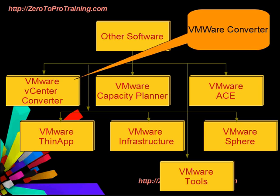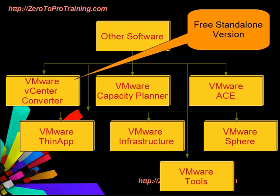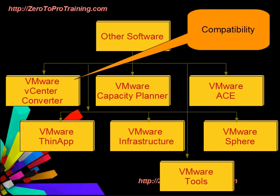VMware vCenter Converter is also known as VMware Converter. It comes in both enterprise and standalone versions; the standalone version is free. It is designed primarily for P2V and V2V conversions. A P2V conversion means converting a physical machine into a virtual machine. A V2V conversion means converting a virtual machine of one type into another.